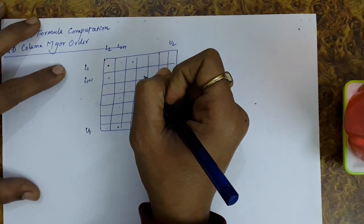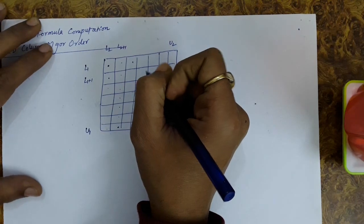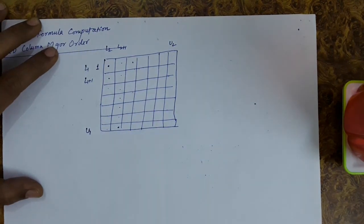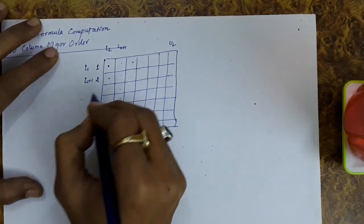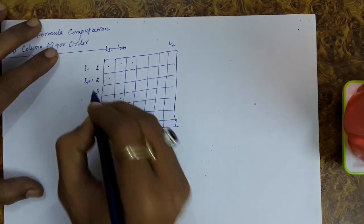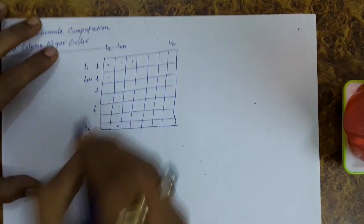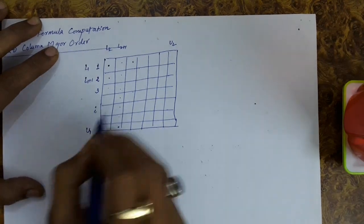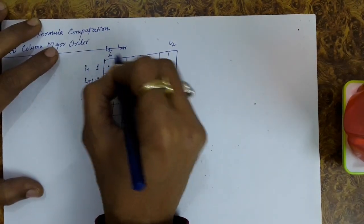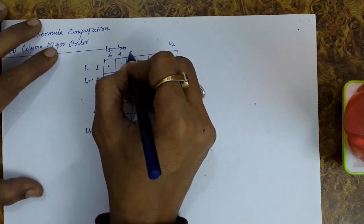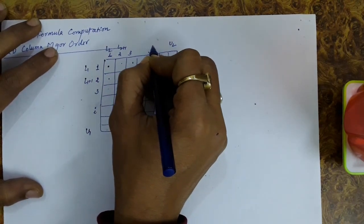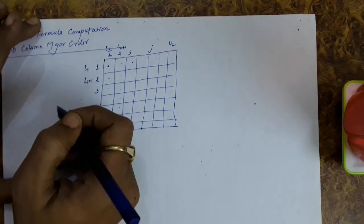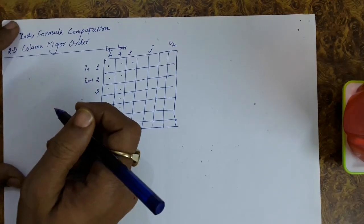Now let us take the same assumptions used for 1D and 2D arrays: the first index starts from 1 on both the row and column sides. So we have first column, second column, first row, second row, third row, and so on. Let's say there is some ith row and the last row is u1. Similarly, for the column side, columns go from 1 to u2, with some jth column in between. Every element requires one byte for storage.